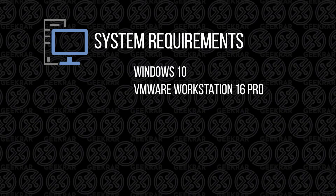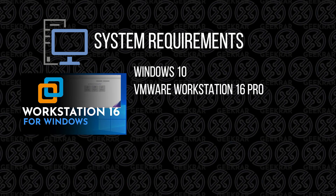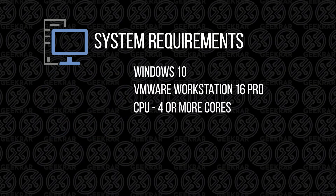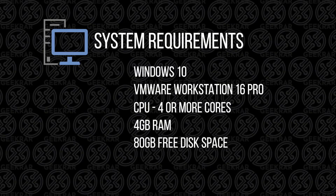If you haven't already installed Workstation Pro and you're looking to do that, you can check out this video and I'll walk you through those steps. You'll need a CPU with four cores or more available. For RAM, we're going to want to have at least four gigs, but you definitely want to have eight or greater for this to run properly. For disk space, we have 80 gigs, but you're going to want to have as much as possible — I recommend anything above 120 gigs.